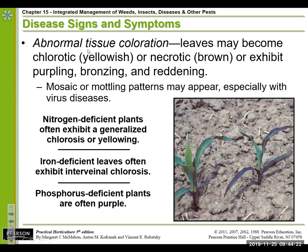Some of the signs and symptoms we look at might include abnormal tissue coloration — leaves or stems look different than they're supposed to. It's important to know exactly what that plant is supposed to look like down to the variety level. We look at leaves becoming chlorotic or yellowish, as well as purpling, bronzing, and reddening — which we also discussed in relation to nutritional issues. Deficiencies often accompany some sort of tissue coloration. We also see brown or necrotic growth where tissue is starting to die.